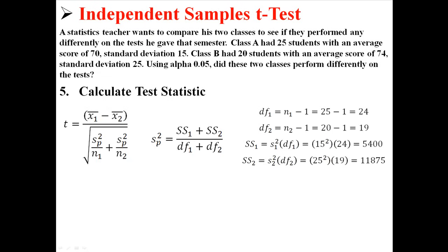Degrees of freedom for each sample is easy. It's just the sample size minus 1. So sample size for n1 for class A is just 25 minus 1 or 24. And the sample size for class B is just 20 minus 1 or 19. That's easy.